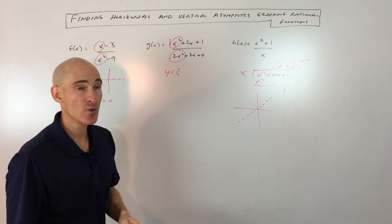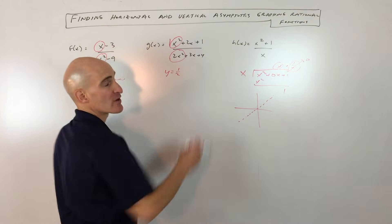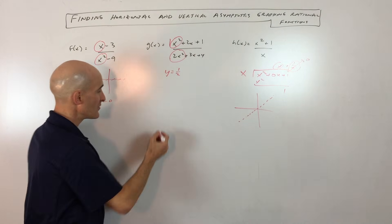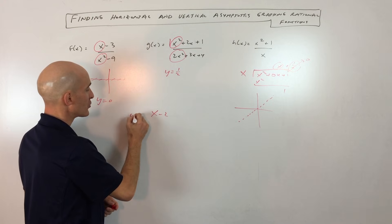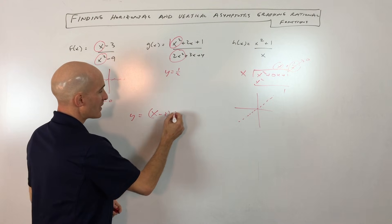Now for the vertical asymptotes, what you want to do is factor the numerator and denominator as much as you can. And the reason is, I'll give you an example. Say for example, you factor your rational function.